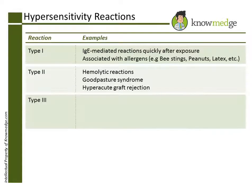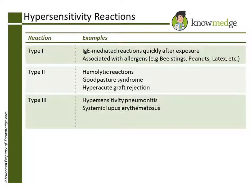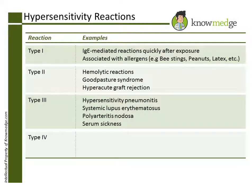Type 3 is known as immune complex, IgG, or IgM-mediated and includes certain diagnoses like hypersensitivity pneumonitis, systemic lupus erythematosus, polyarteritis nodosa, and serum sickness.